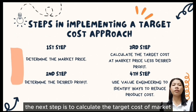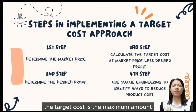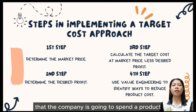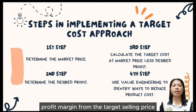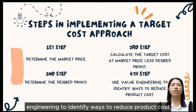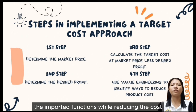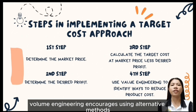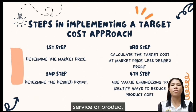Third, calculate the target cost as market price less desired profit. The target cost is the maximum amount the company is willing to spend on a product or service and is calculated by subtracting the desired profit margin from the target selling price. Fourth, use value engineering to identify ways to reduce product cost — analyzing a service, system, or product to determine the best way to manage important functions while reducing cost by encouraging alternative methods and materials that are less expensive without lowering functionality.